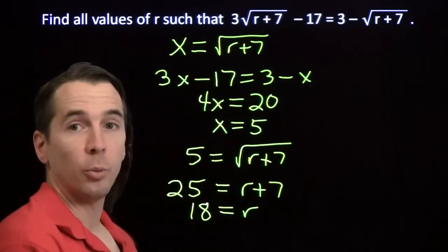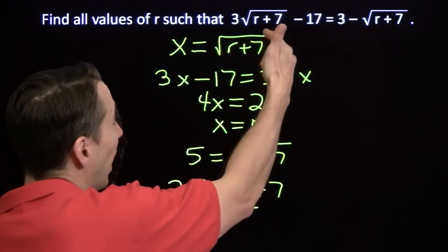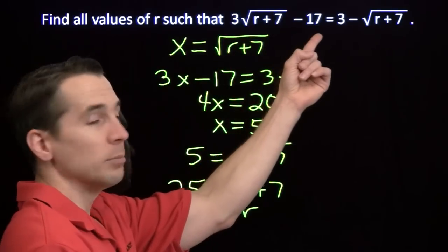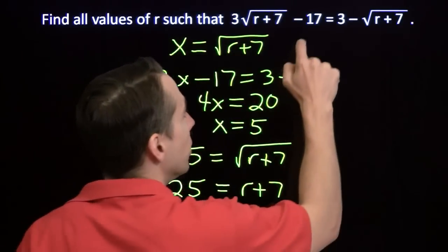Just like planned, the square root of 25 is 5. 5 times 3 is 15. 15 minus 17. We get negative 2 on this side.